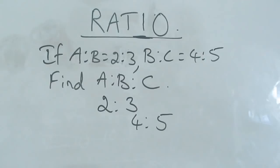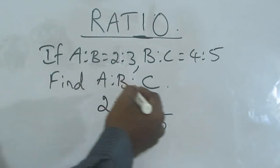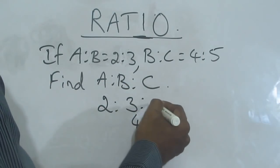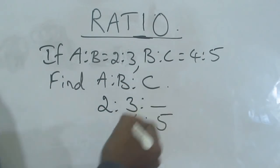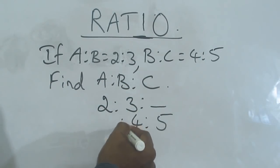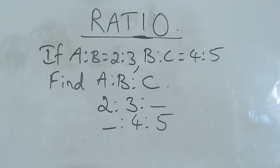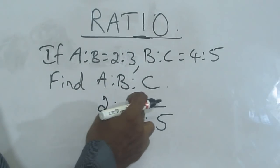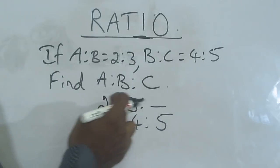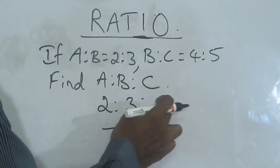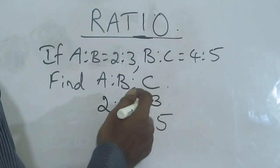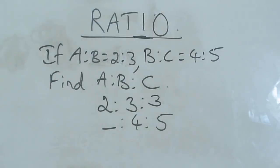So what do you understand? In the first line, I don't know the value of C. In the second line, I don't know the value of A. So what you have to do is: here the first line is ending with 3, that is 2 is to 3.